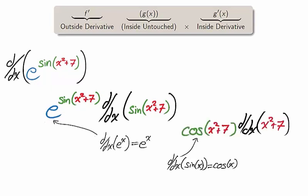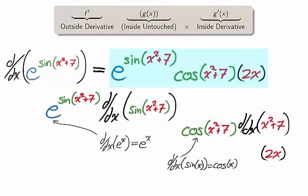We then take the derivative of sin x squared plus 7, using the chain rule a second time. The outside function is now sine, whose derivative is cosine of x, and the inside function is x squared plus 7, which differentiates to be 2x. We now have the derivative of the full function, with just two applications of the chain rule.